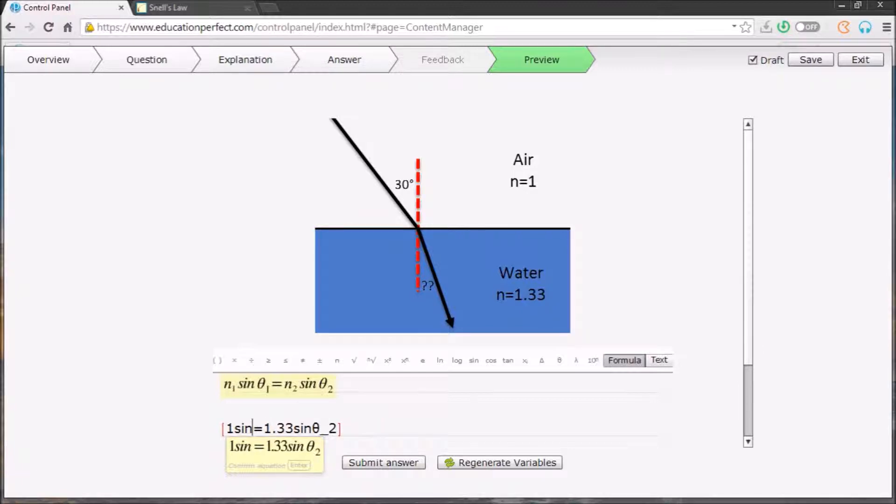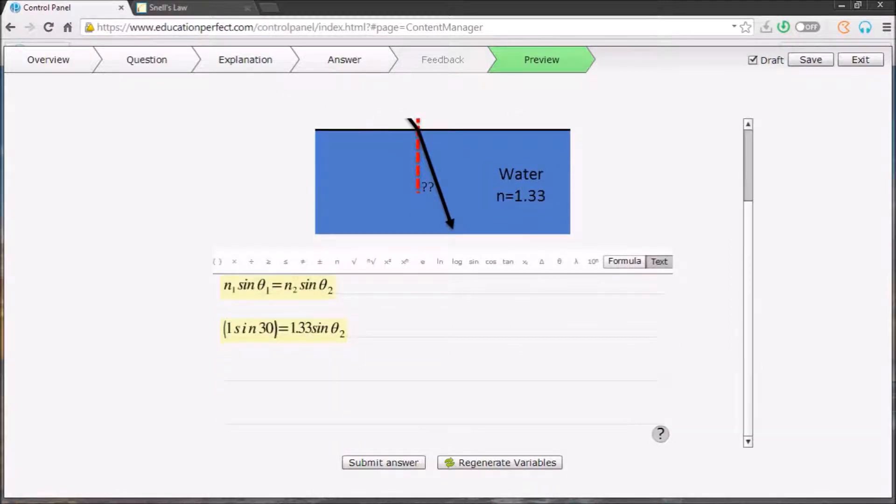First solve the left hand side of this equation. 1 times sine 30 comes out as exactly 0.5. Usually you get a windy decimal here, it depends on the angle.